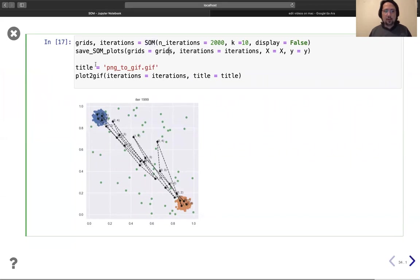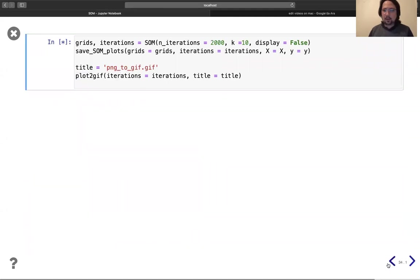It will return every grid in the 10th iteration from 0 to 200 iterations. We will see grids and iterations, and I will use the function to store the plots, and then I will transform it to GIF. So let's run this. It will take a little time.